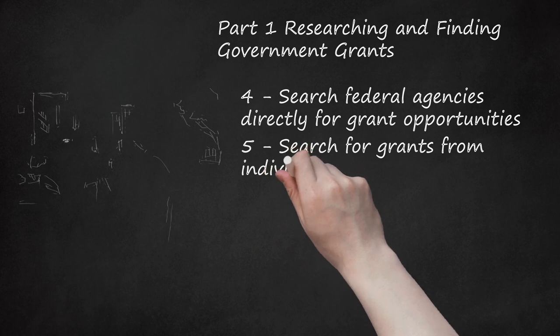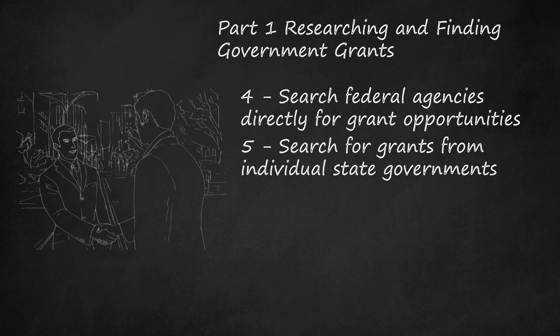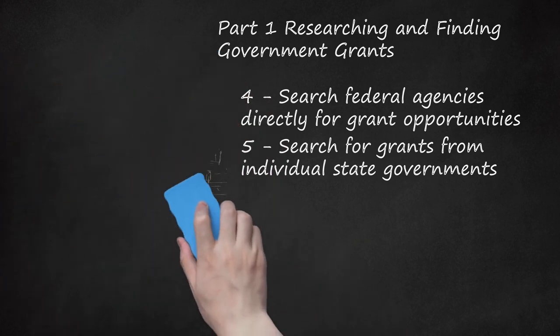Step 5: Search for Grants from Individual State Governments. Run an internet search using the name of your state and the terms "grants" or "grant opportunities." This will generally lead you to a centralized government website maintained by the Office of the Governor, Secretary of State, or Attorney General. From there, you can search for grants offered by individual agencies or departments of your state government. As an example, a search for Montana State Grants leads to the official state website Montana.gov and a list of 16 different categories of grants, including arts, wildlife, community development, and others. Many state grants are budgeted with money that initiates from the federal government, so you may find some overlap in your state research and federal research.